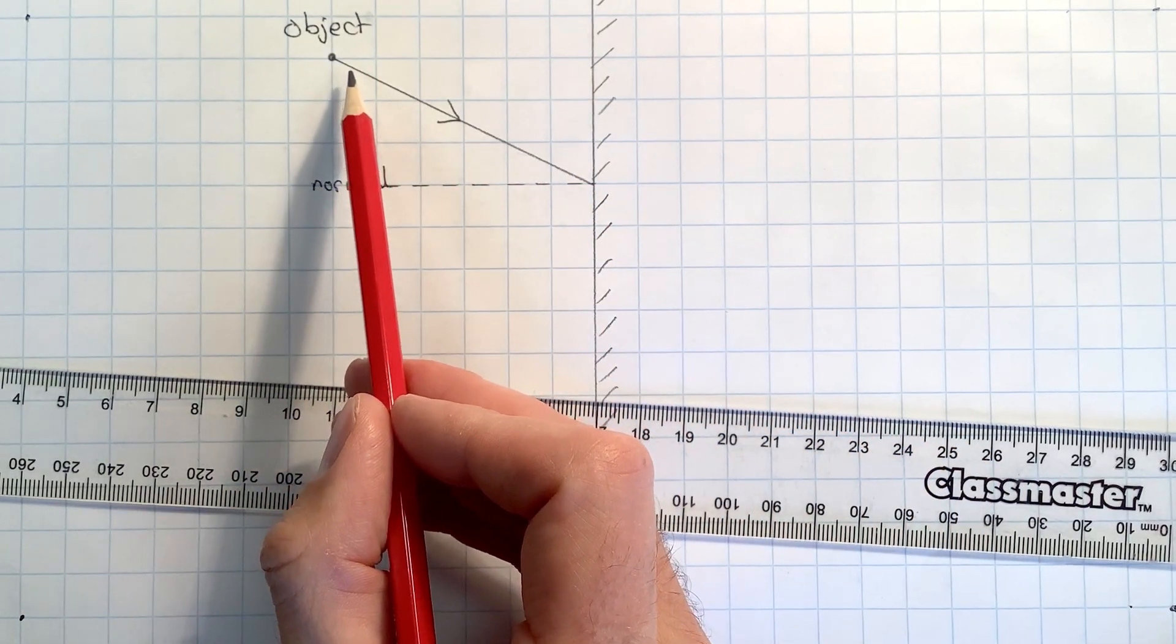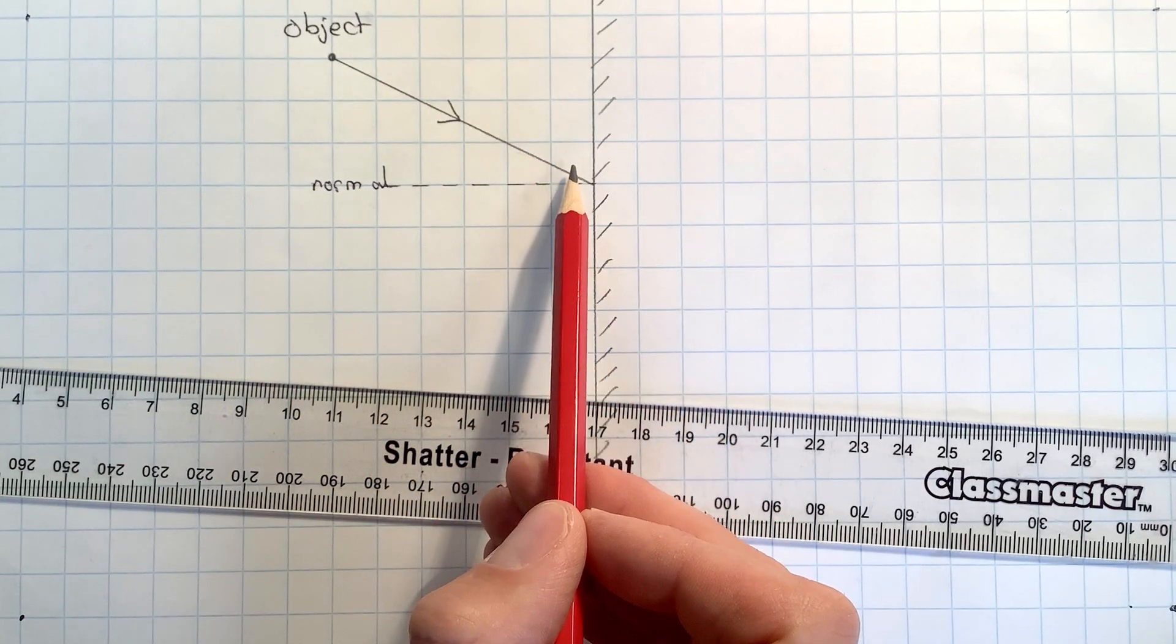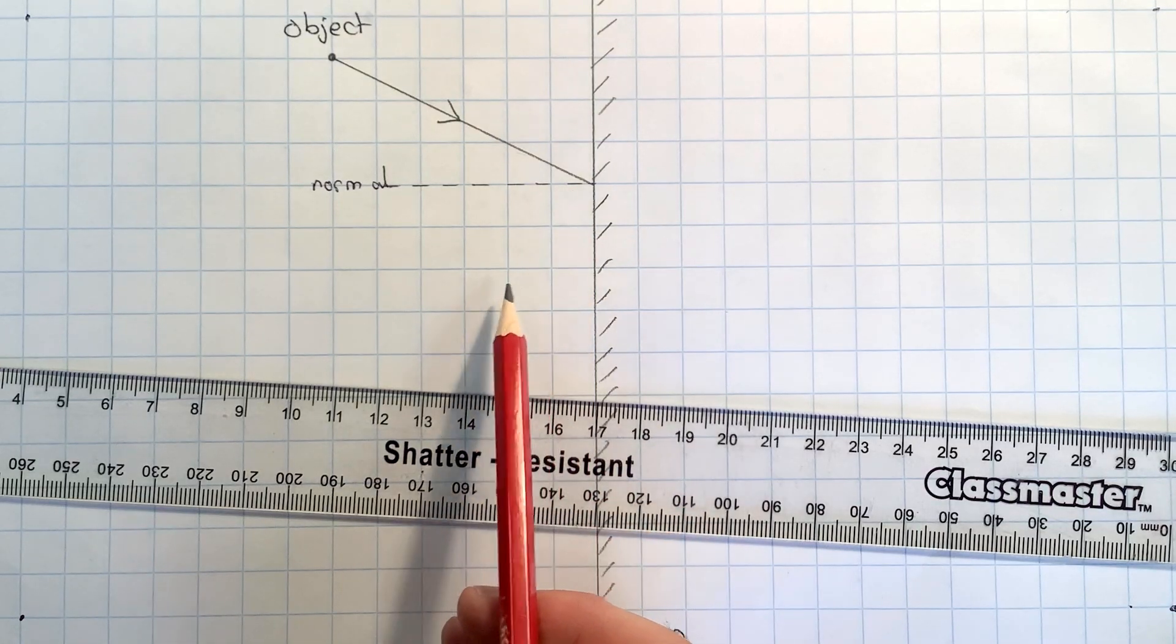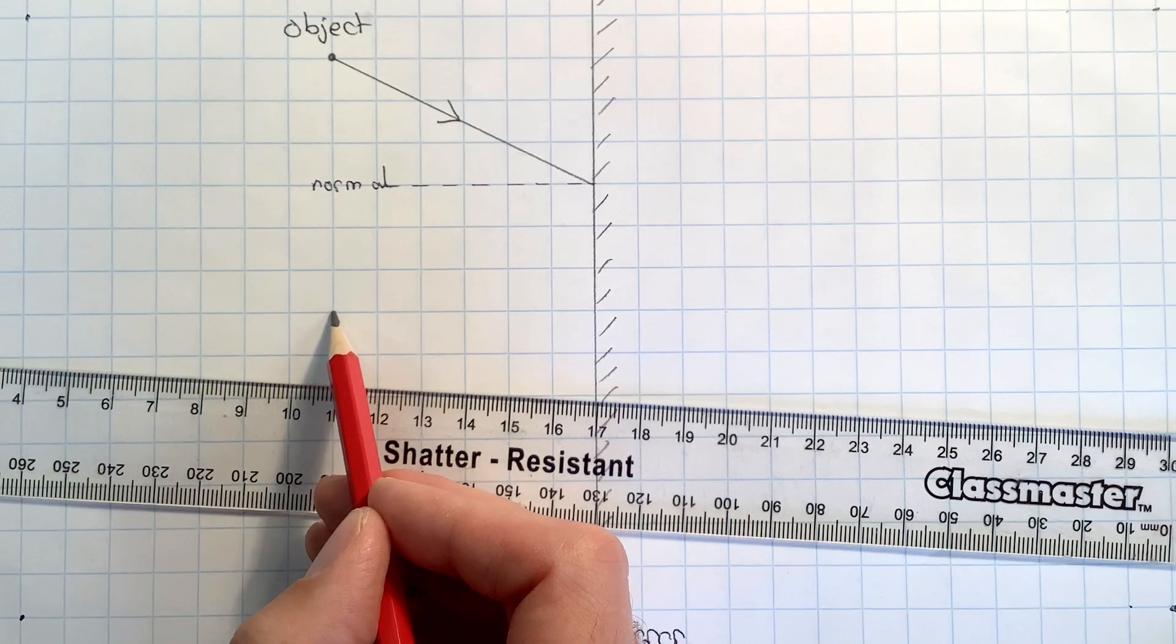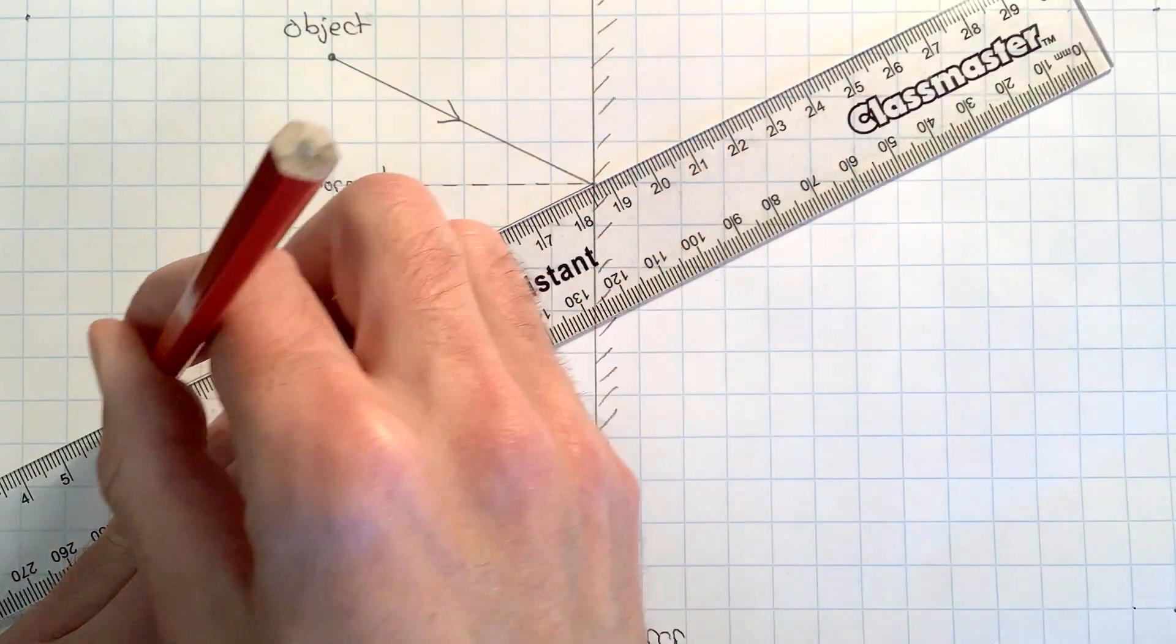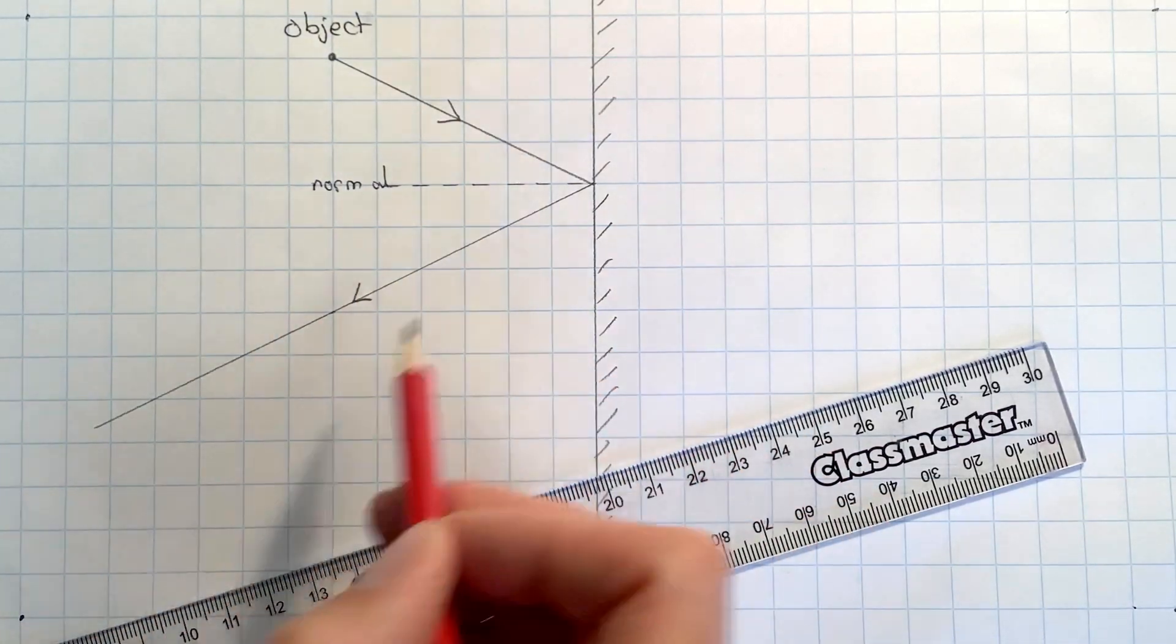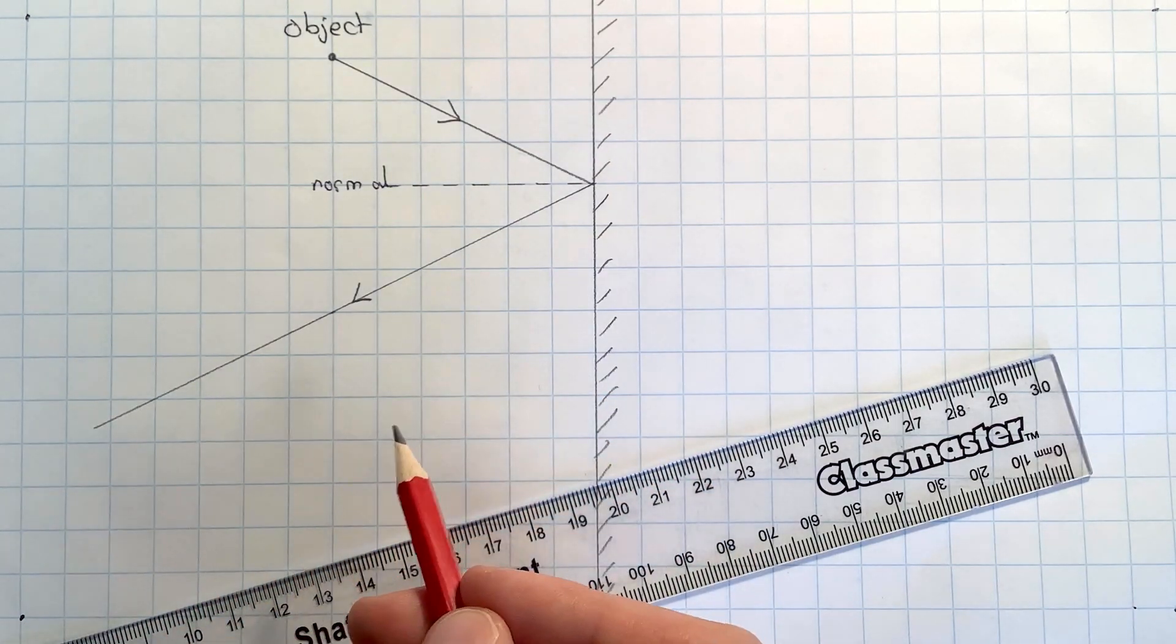Here when the ray went six squares towards the mirror it went three squares down. So if I do the same thing and do three squares down and six squares out, if I make my reflected ray go through that point there, it will ensure that the angle of incidence is exactly the same as the angle of reflection. I could have measured these angles with a protractor if I wasn't on squared paper, but this makes things quite easy.